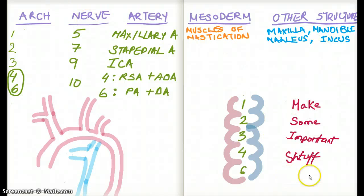See, this is where the magic of the mnemonic really plays a big part. The M for maxillary artery, or make some important stuff. M for maxillary artery, M for muscles of mastication, M for maxilla, M for malleus, M for mandible, and incus. You just have to remember it. That doesn't really fall under the M mnemonic.